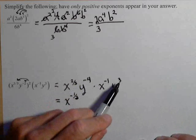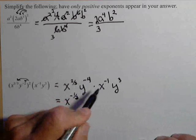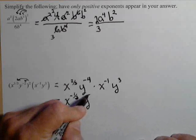Times, y to the negative fourth times y cubed gives us—exponents add—negative four plus three, which gives us y to the negative one.